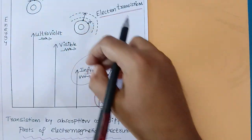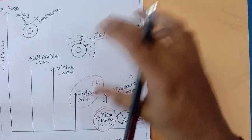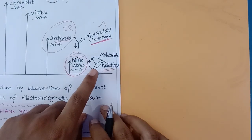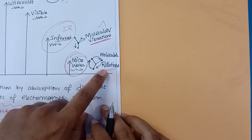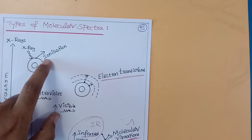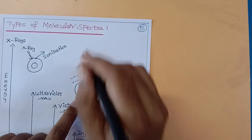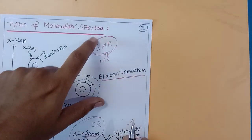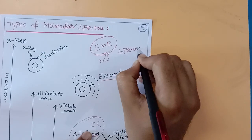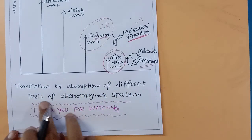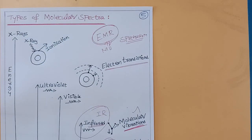So for each type of electromagnetic radiation, there is a corresponding type of transition. Certain energy is needed to promote electrons; certain energy causes molecular vibrations; certain electromagnetic radiation causes molecular rotation. The energy required for rotation, vibration, electron transitions, and ionization is provided in the form of electromagnetic radiation. The interaction between molecules and electromagnetic radiation, and the study of those changes, is what we call spectroscopy.